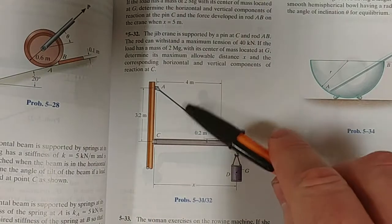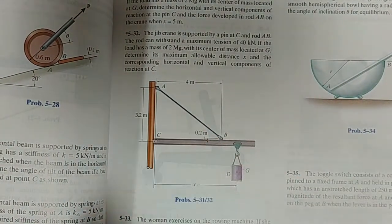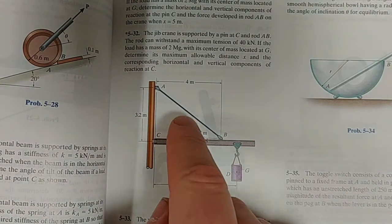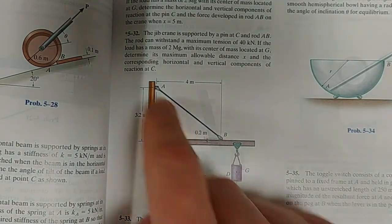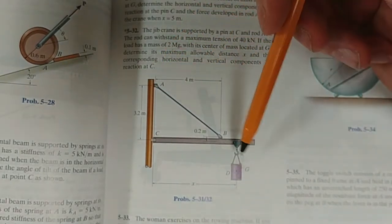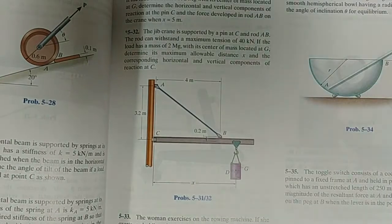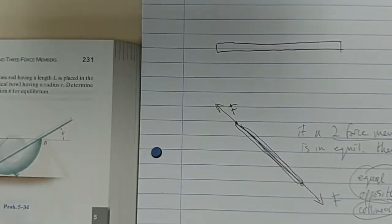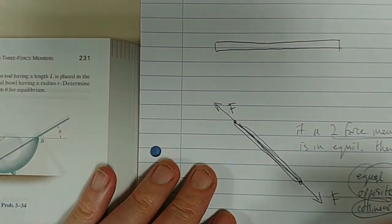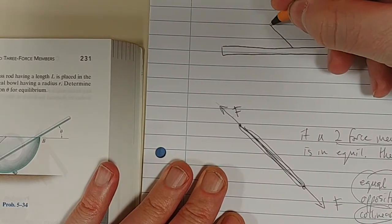So whenever we see a two-force member, there's a force applied there and a force applied there. It is in equilibrium. That member is in equilibrium, which means that those forces must pass through each other to cancel each other out and to cancel the moment out. So what's the point that I'm trying to make?